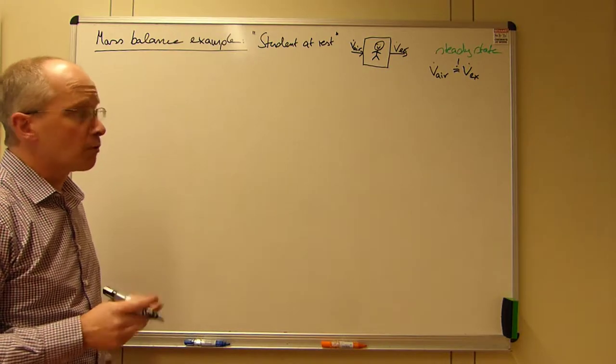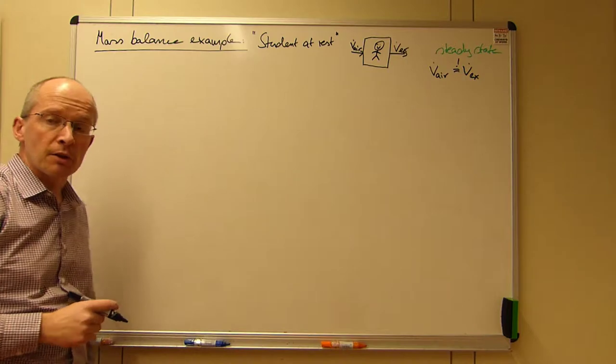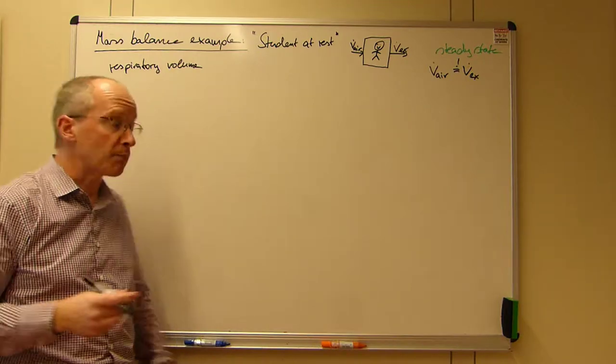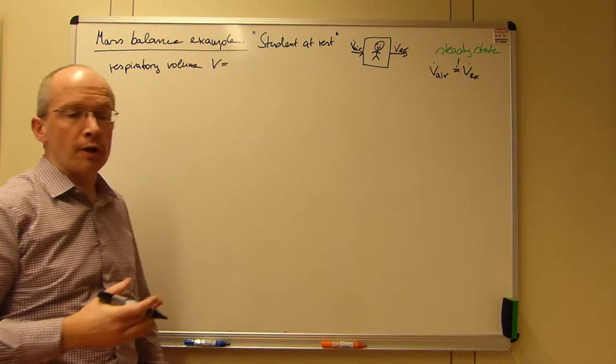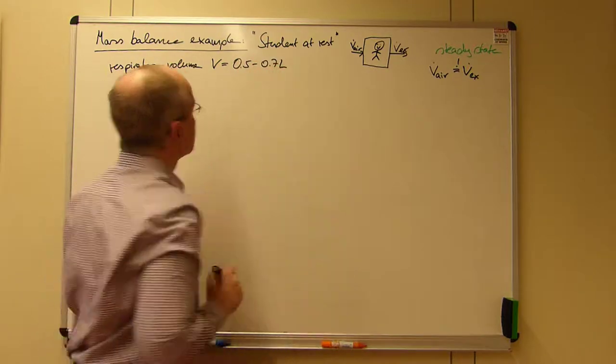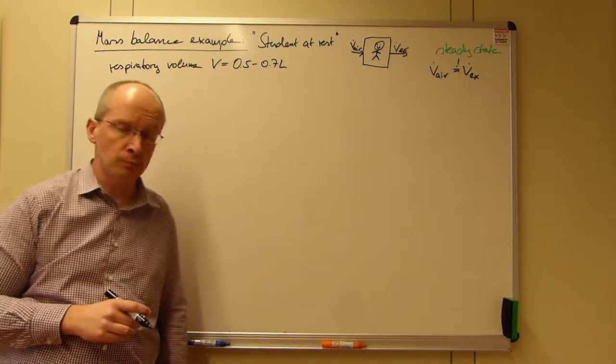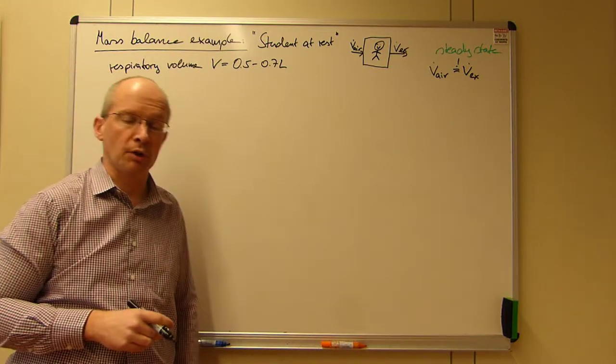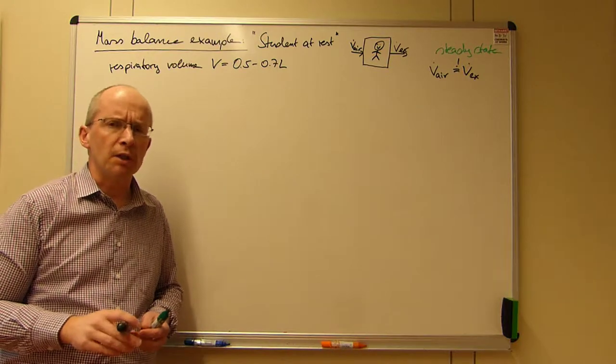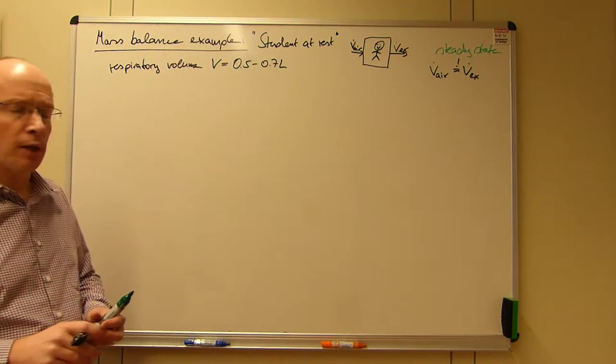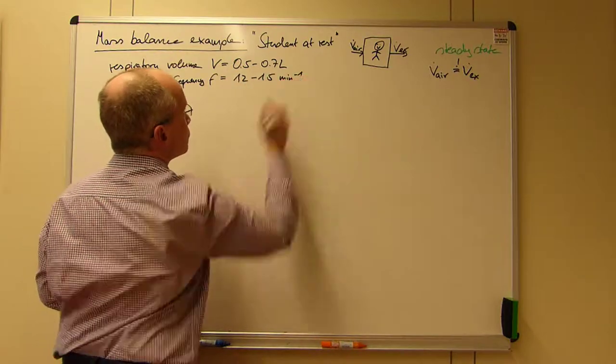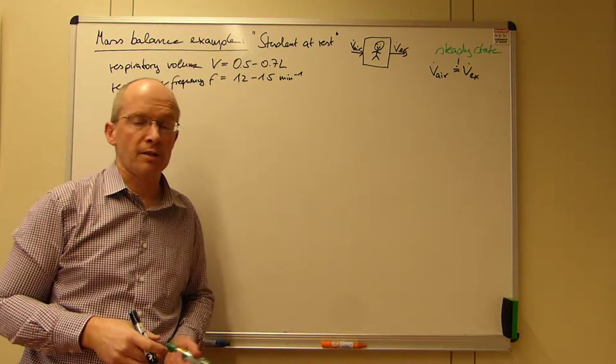So how do we get these volume flows? We get them from two figures. We need the so-called respiratory volume, and that's something I looked up previously. It's generally agreed to be something in the range of 0.5 to 0.7 liters. And the question is how often do you do that? There is a general agreement, believed to be in the range of 12 to 15 per minute. As I will need this in seconds later, I will convert this now.